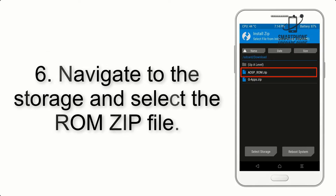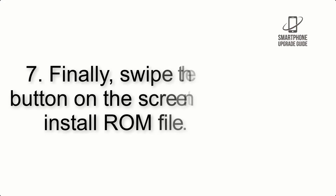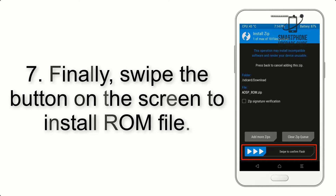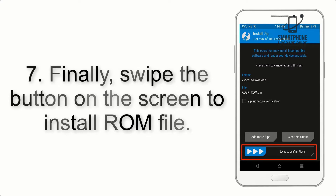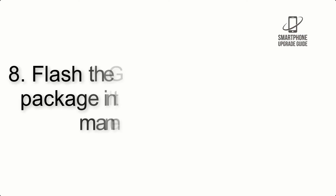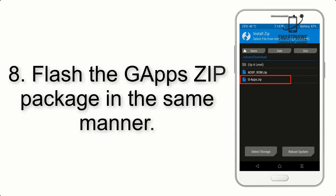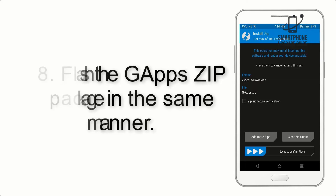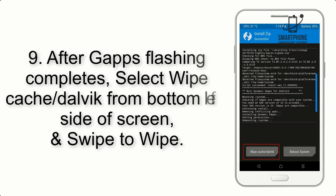Step 5: go back to the recovery main screen and tap on the Install button. Step 6: navigate to the storage and select the ROM zip file. Step 7: swipe the button on the screen to install the ROM file. Step 8: flash the GApps zip package in the same manner.